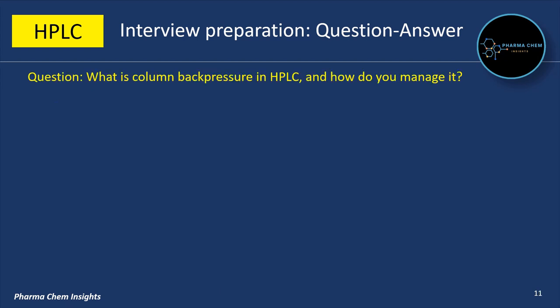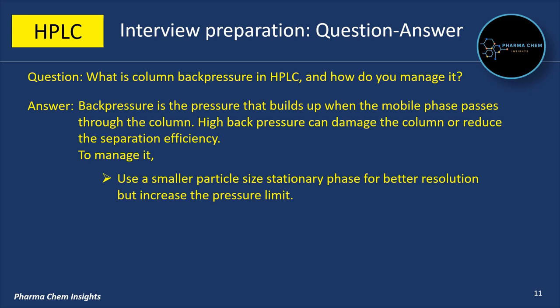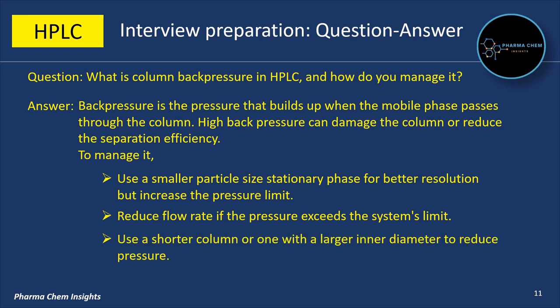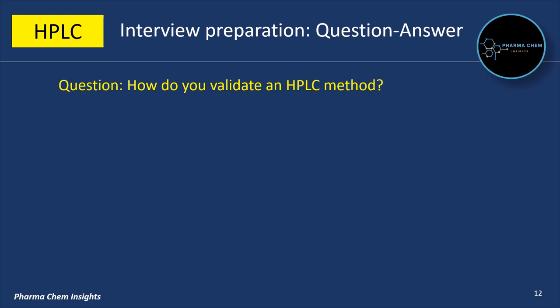Now let's cover column back pressure. You might be asked: what is column back pressure in HPLC and how do you manage it? Back pressure is the pressure that builds up when the mobile phase passes through the column. High back pressure can damage the column or reduce separation efficiency. To manage it: use a smaller particle size stationary phase for better resolution but be aware of increased pressure limits; reduce flow rate if the pressure exceeds the system's limit; use a shorter column or one with a larger inner diameter to reduce pressure; and ensure the mobile phase is properly filtered to avoid clogging the column.